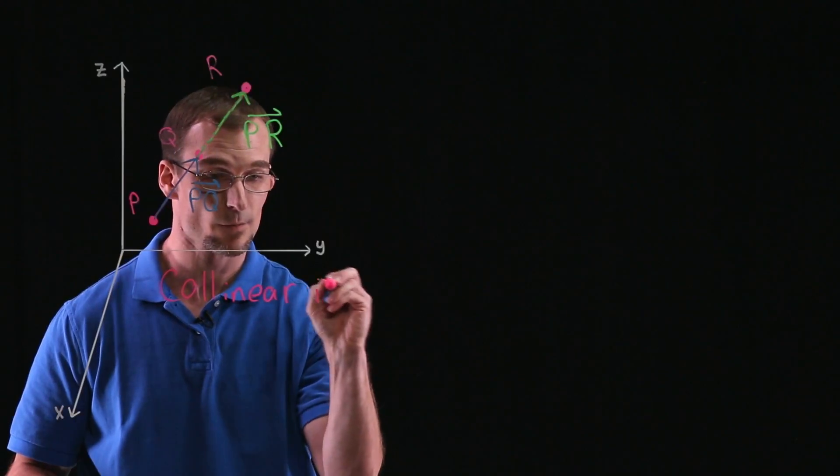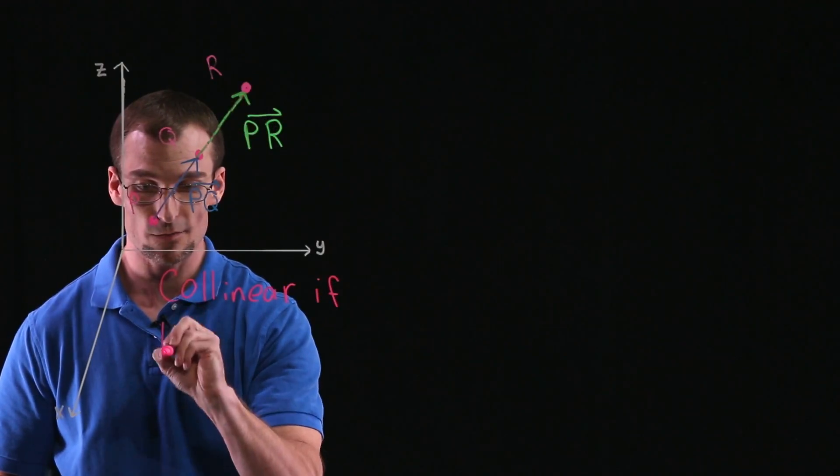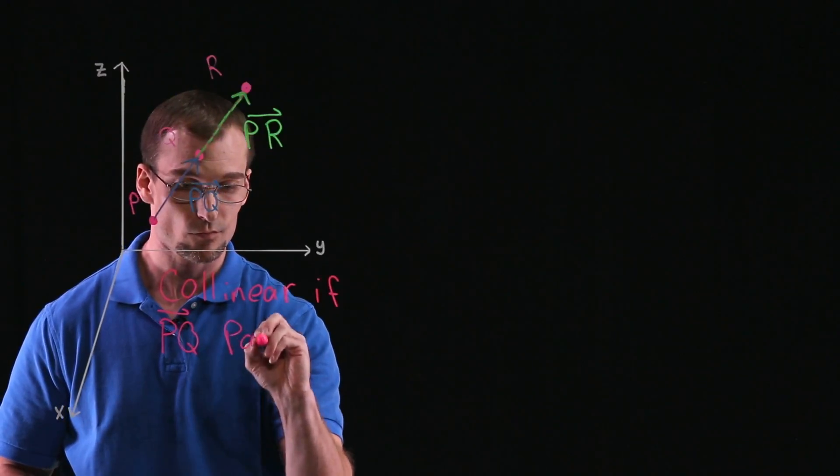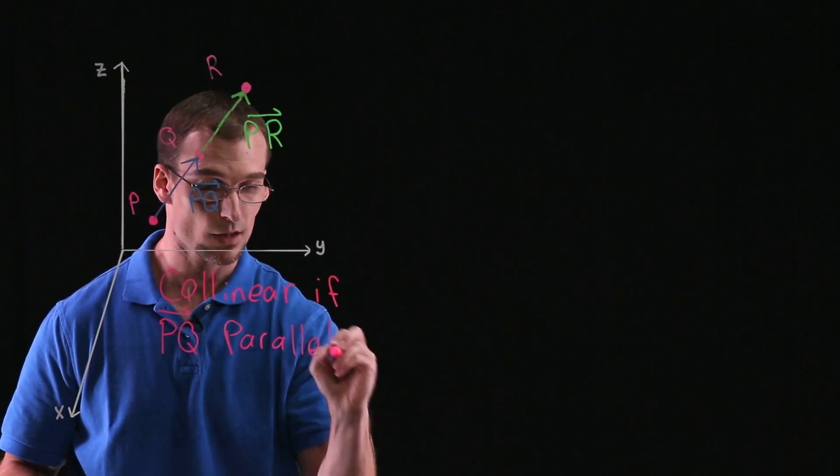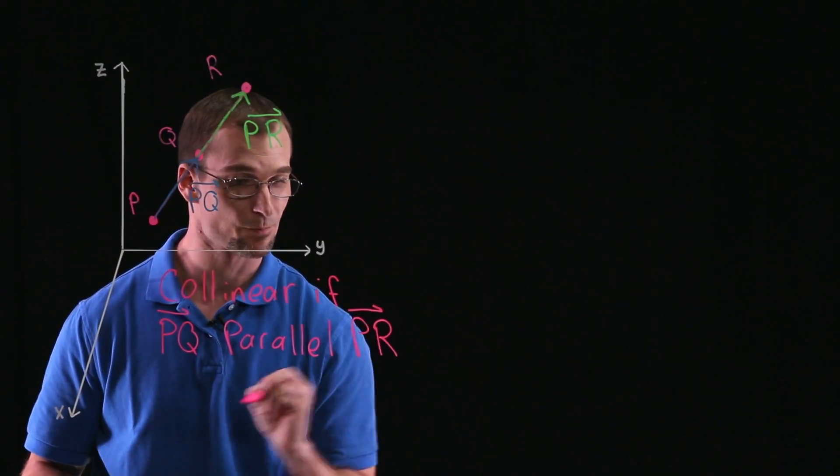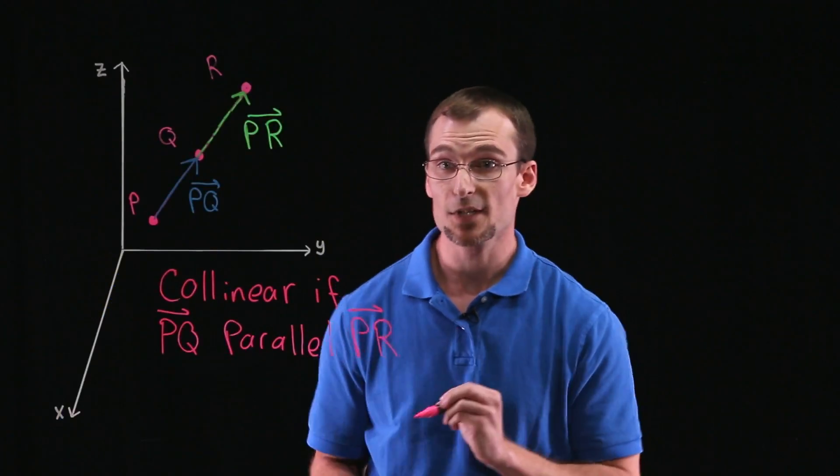So our points are collinear if, namely, the vectors created between points P and Q is parallel with the vector created with point P and R. So that gives us kind of a game plan.